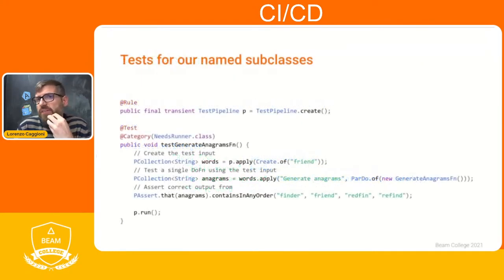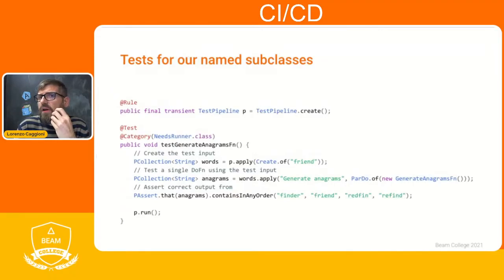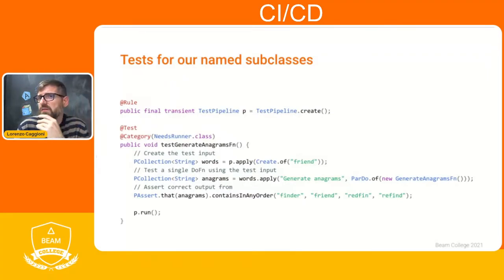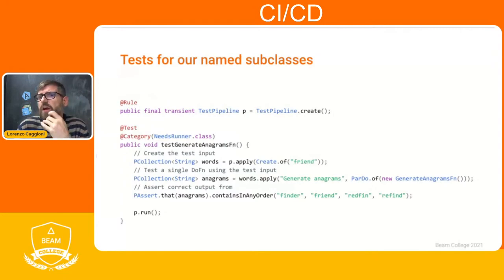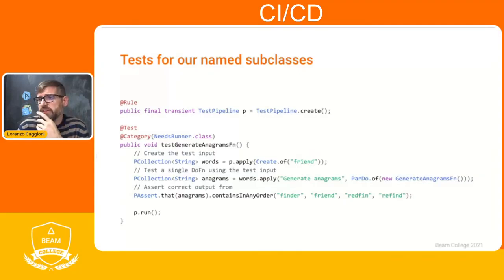The following Java code sample uses the PAssert class to check for correct output. If we want to test the GenerateAnagrams function, we can create a PCollection with sample input data — the word 'friend' in the example — and pass the collection to the transform function. We conclude the test by calling PAssert to compare the output of the transform function to the expected result.